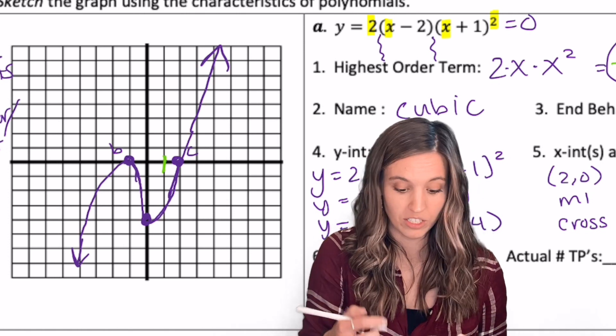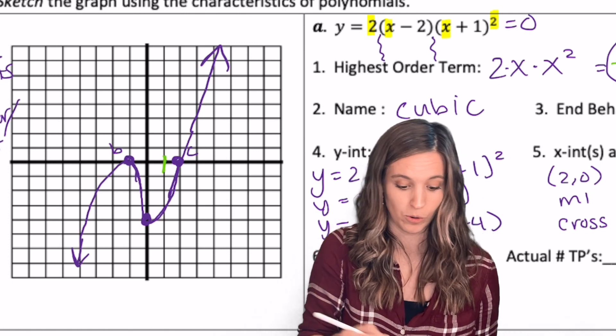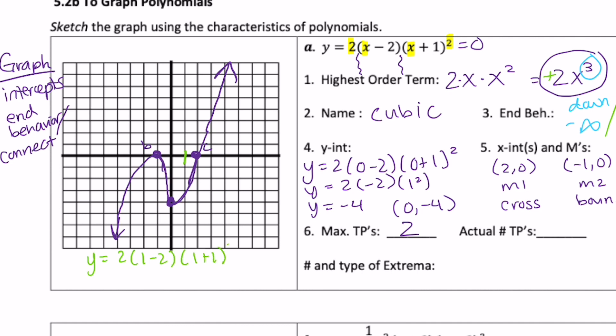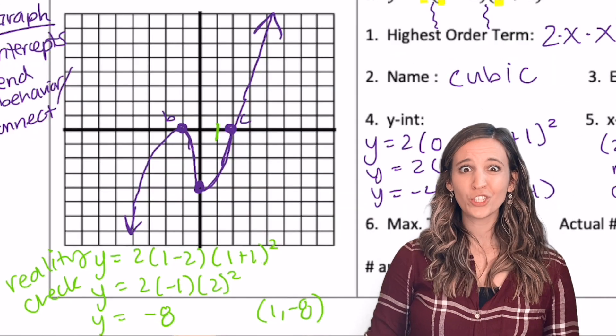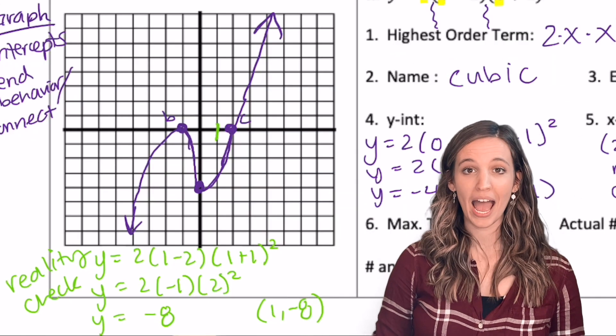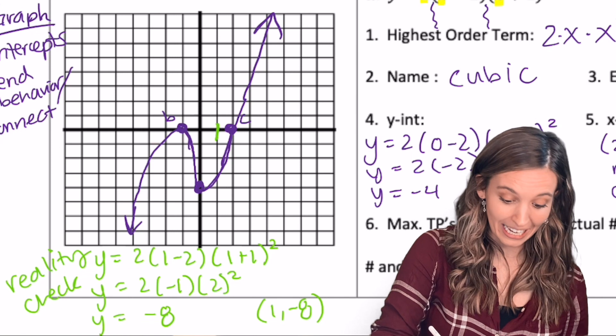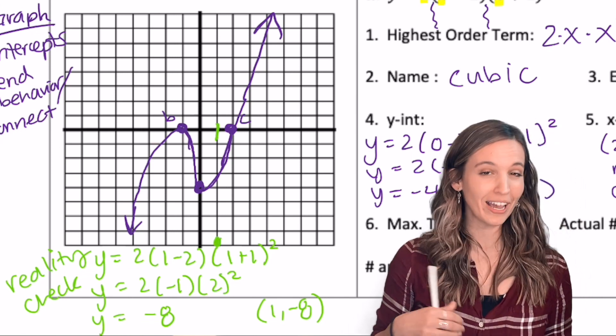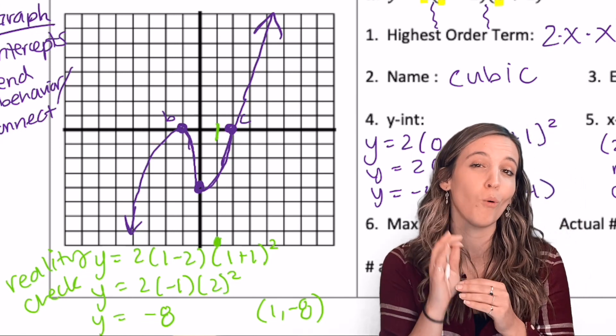If I want to know, I can just plug one into my equation and figure out where the y value is supposed to be. Well, sure enough, my guess was wrong. At one, I'm supposed to be down at negative eight. That's way down here. So I could adjust my graph to make my sketch even more precise.